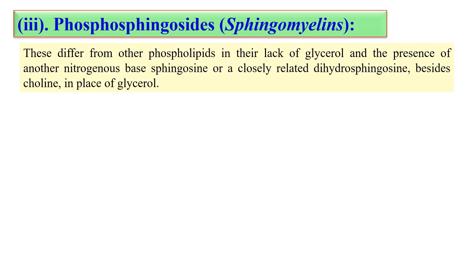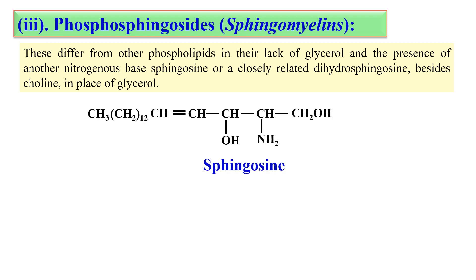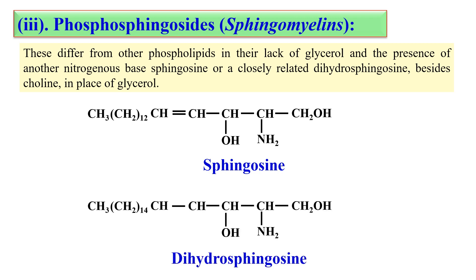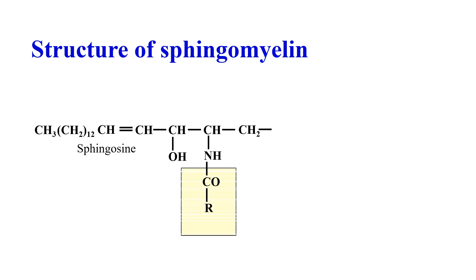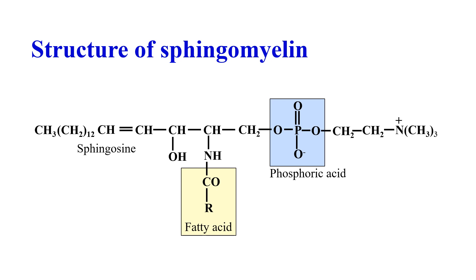The next category is phosphosphingolipids or sphingomyelin. These type of phospholipids do not have a glycerol molecule. Instead of glycerol, they have the sphingosine molecule or dihydrosphingosine molecules. Looking at the structure of sphingomyelin, the sphingosine molecule is attached with a fatty acid, it also has the phosphoric acid group, which is attached with choline. So this is the structure of sphingomyelin.